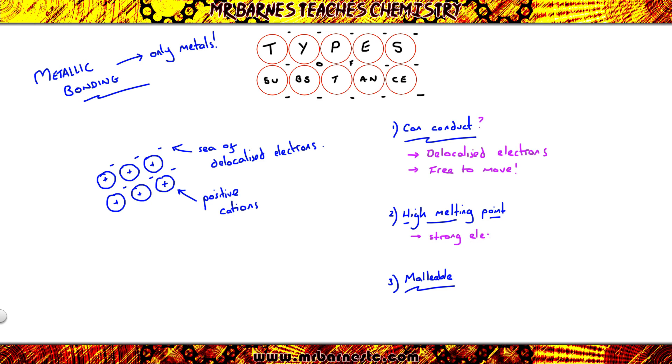If we move on to the melting point, there is a strong electrostatic attraction between your cation and your negative delocalized electrons. Therefore lots of energy is needed to break the bonds.